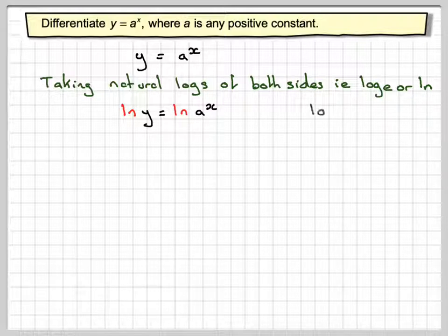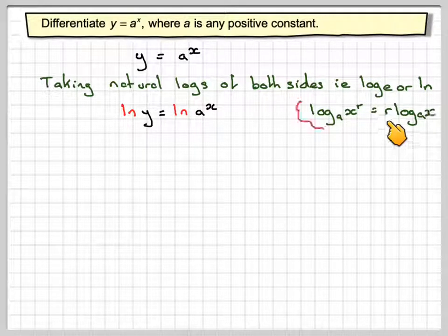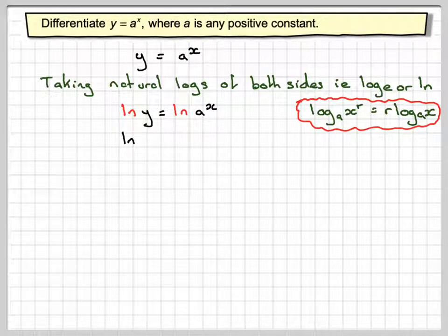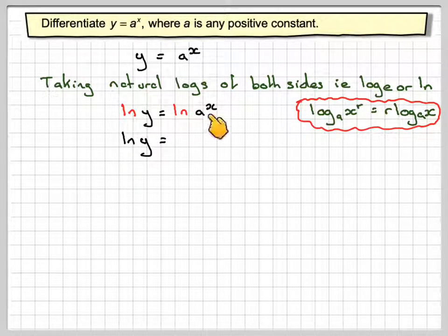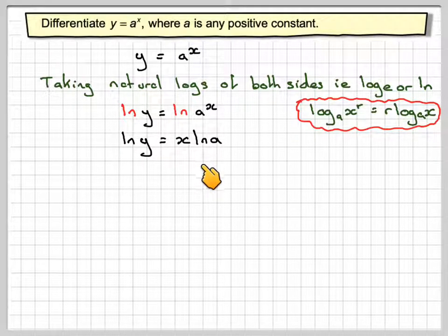Now there's a rule of logarithms, it says log to the base a of x to the r means we can bring that r down in front of the logarithms, and we get r log a of x. So we've got ln of y, so bringing down now this x in front, we can say that x is ln of a.